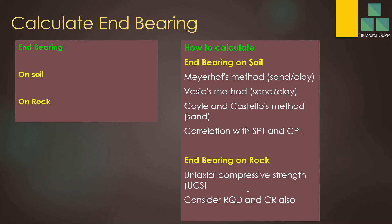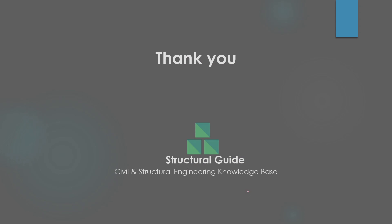For end bearing in rock, rock samples taken during geotechnical investigation are tested to obtain the uniaxial compressive strength (UCS), which is used to calculate the end bearing. RQD and core recovery values must also be considered in this evaluation, because even if a rock sample appears sound, there may be fractures in the rock mass that reduce its capacity. All these factors must be considered when determining the end bearing of rock.